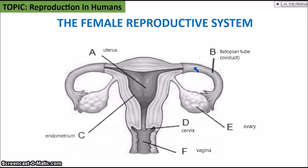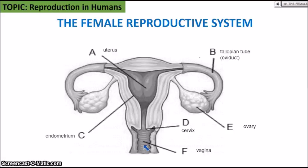Once fertilization occurs, a ball of cells moves down towards the uterus. A fertilized egg is known as a zygote, which undergoes cell division and implants itself into the uterus, beginning pregnancy. The cervix dilates when the mother is about to give birth. The vagina is the main sex organ — receiving the penis during intercourse, providing the exit for menstrual blood, and serving as the birth canal for the baby.